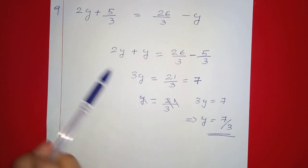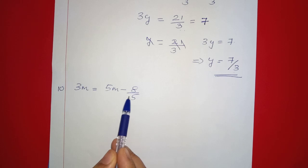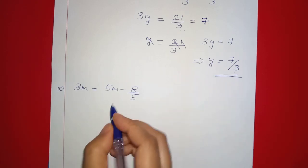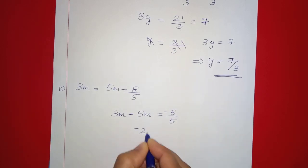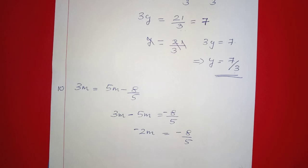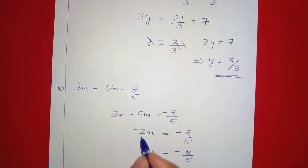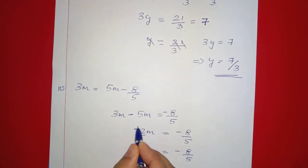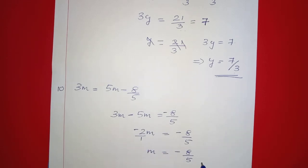Next question: 3m equals 5m minus 8 by 5. We rearrange: 3m minus 5m equals minus 8 by 5, so minus 2m equals minus 8 by 5.